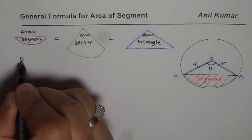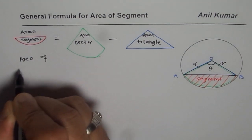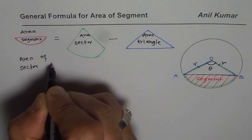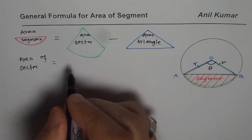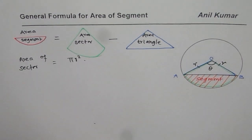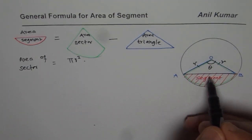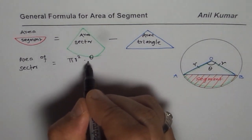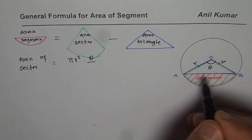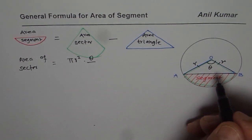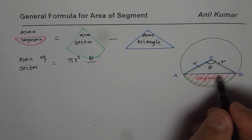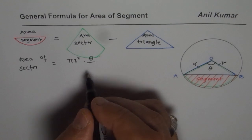Area of sector is area of the whole circle which is pi r squared times ratio of this angle. If this angle is smaller, the area is going to be smaller. To the total circle area. So if you are doing it in radians, then it should be 2 pi. And if you are doing it in degrees, it should be 360 degrees.